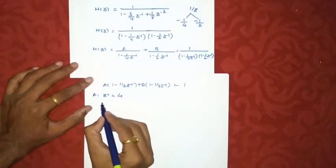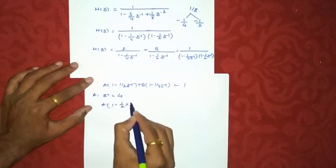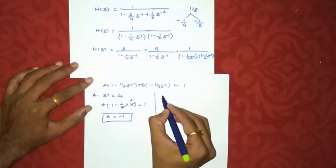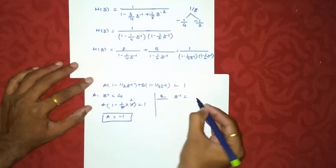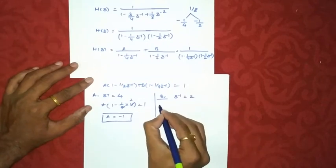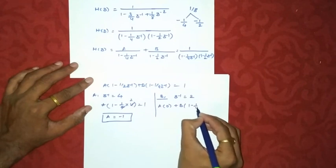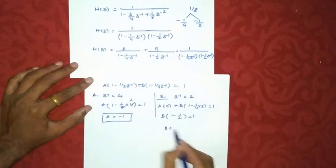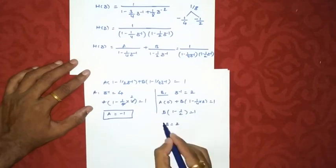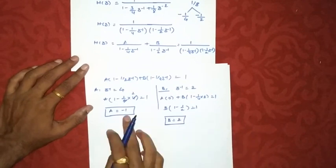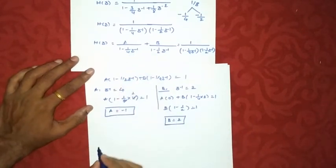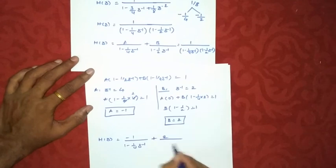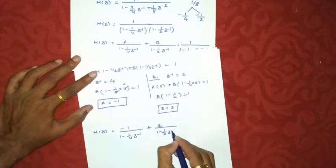Substituting z⁻¹ = 4 to find A: A·(1 − (1/2)·4) = 1, so A·(1 − 2) = 1, giving A = −1. To find B, setting z⁻¹ = 2: B·(1 − (1/4)·2) = 1, so B·(1/2) = 1... working through the algebra gives B = 2. Therefore A = −1 and B = 2.